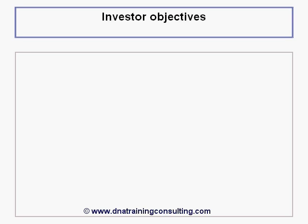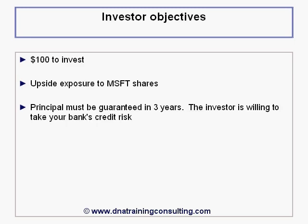We begin by assuming that an investor has given you $100 and has asked you to provide her with a vehicle for investing in Microsoft shares for a 3-year time horizon. Recognizing, however, that Microsoft shares are volatile and could expose much of her investment to a loss, the investor also asks that your bank guarantee the return of her principal in 3 years' time.